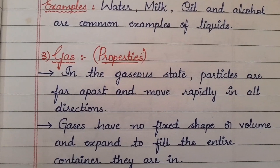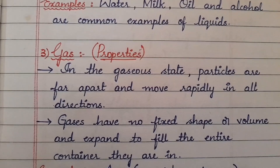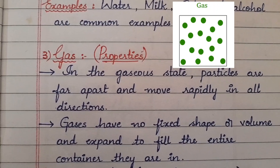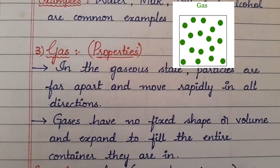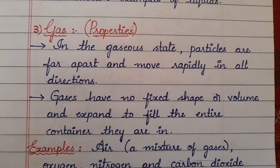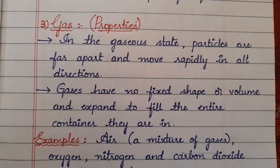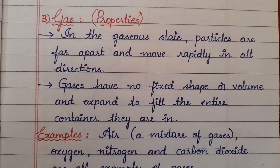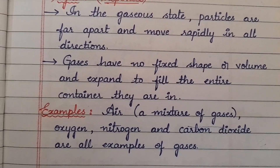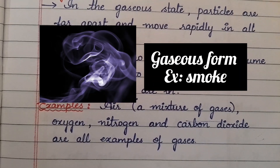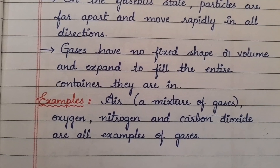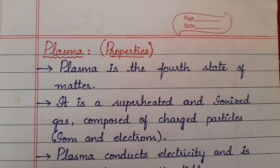Coming to the third one, the gaseous state. In the gaseous state, particles are far apart and move rapidly in all directions. Gases have no fixed shape or volume and they expand to fill the entire container they are in. Examples of gases include air, a mixture of gases, and gases like oxygen, nitrogen, and carbon dioxide. There are many gases, and only some are included here.